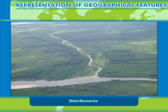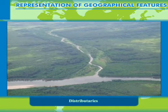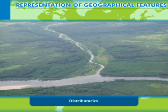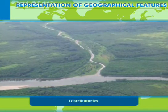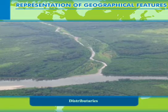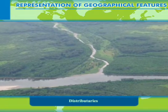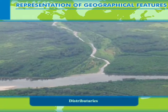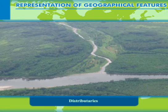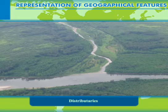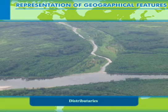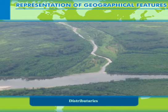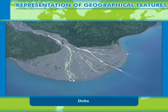A distributary or distributary channel is a stream that branches off and flows away from a main stream channel. They are a common feature of river deltas. A distributary takes water away from the main river at its mouth. This phenomenon is known as river bifurcation.